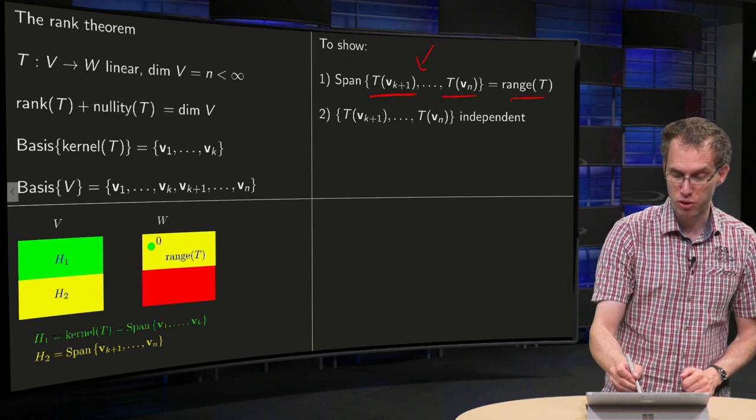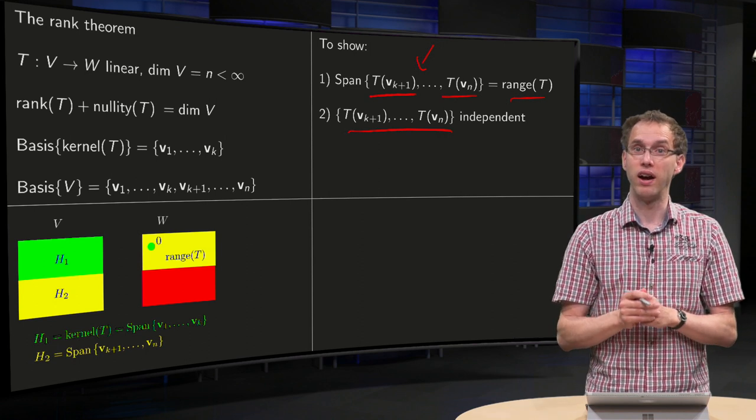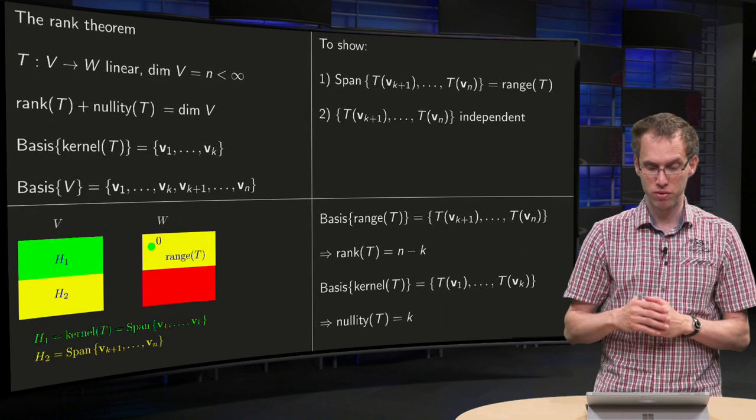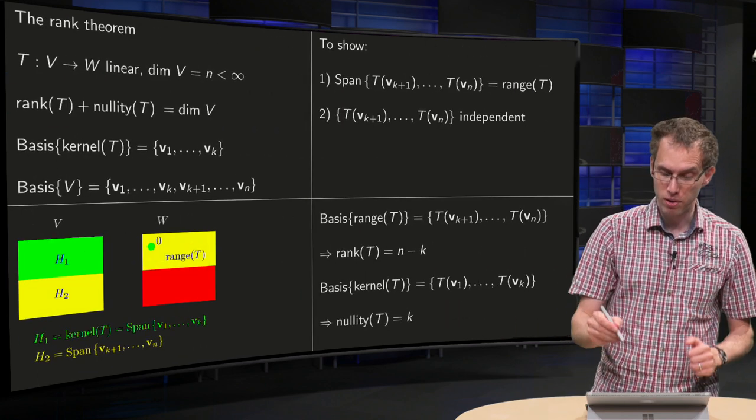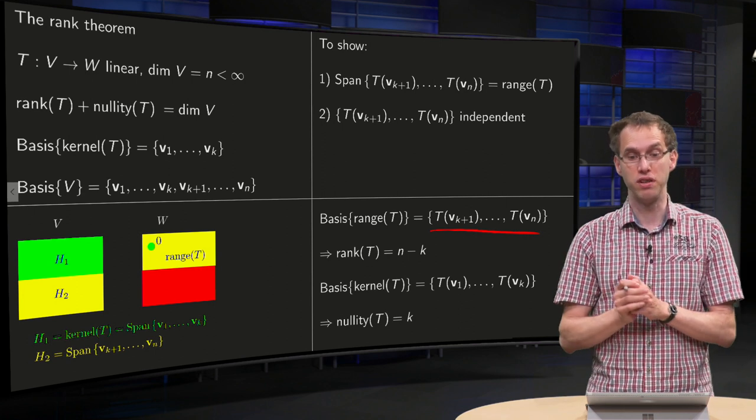And second, you need, of course, to show that T(vk plus 1) up to T(vn) are independent. Well, if you have that, you are basically done, because what do we know then? Then you know that the basis of the range of T will be T(vk plus 1) up to T(vn).